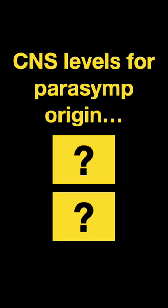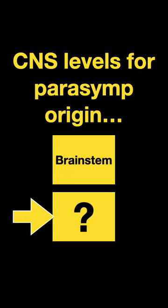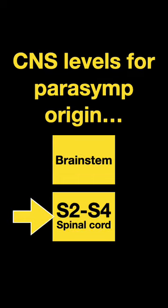The CNS levels for parasympathetic is the brainstem and S2 to S4 spinal cord levels.